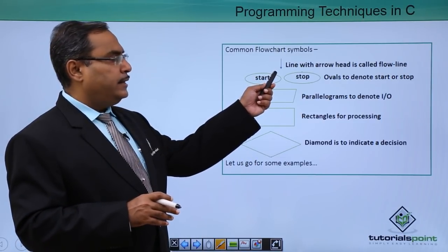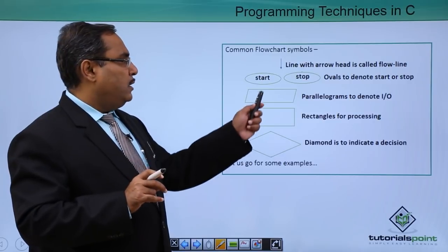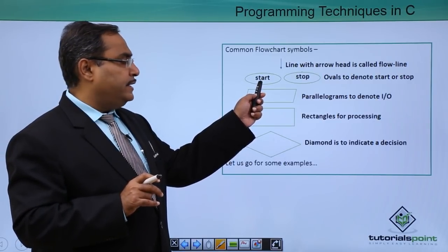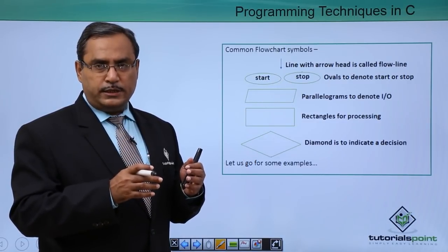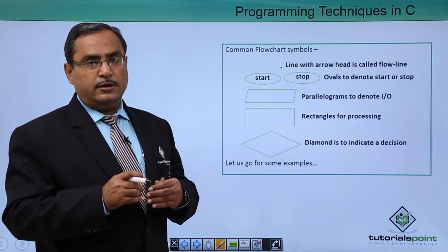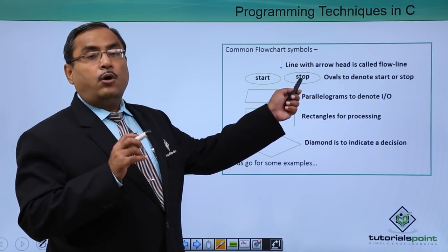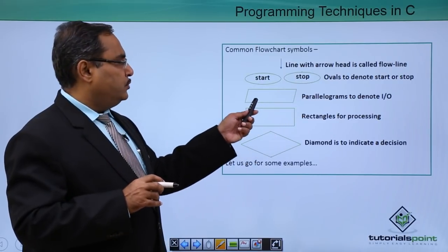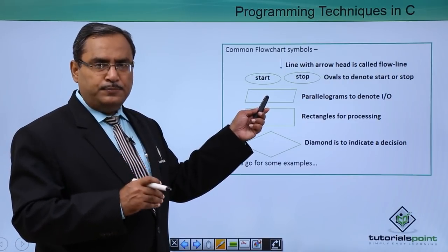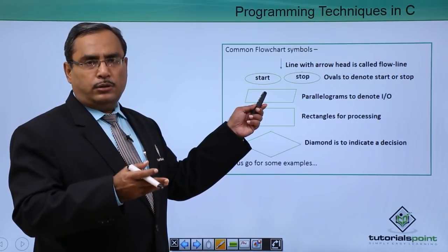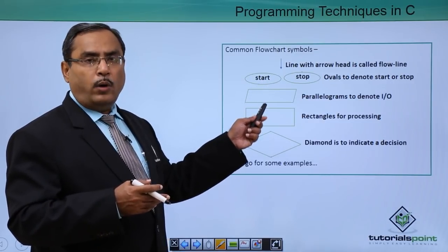The flow line is a line with an arrowhead depicting how logic flows through the flowchart. The oval-shaped box represents start and stop — the beginning and end of the flowchart. Start has only one outward arrow and stop has only one inward arrow. The parallelogram denotes input/output operations — used when taking input from the keyboard or displaying output on the screen — with one input line and one output line.